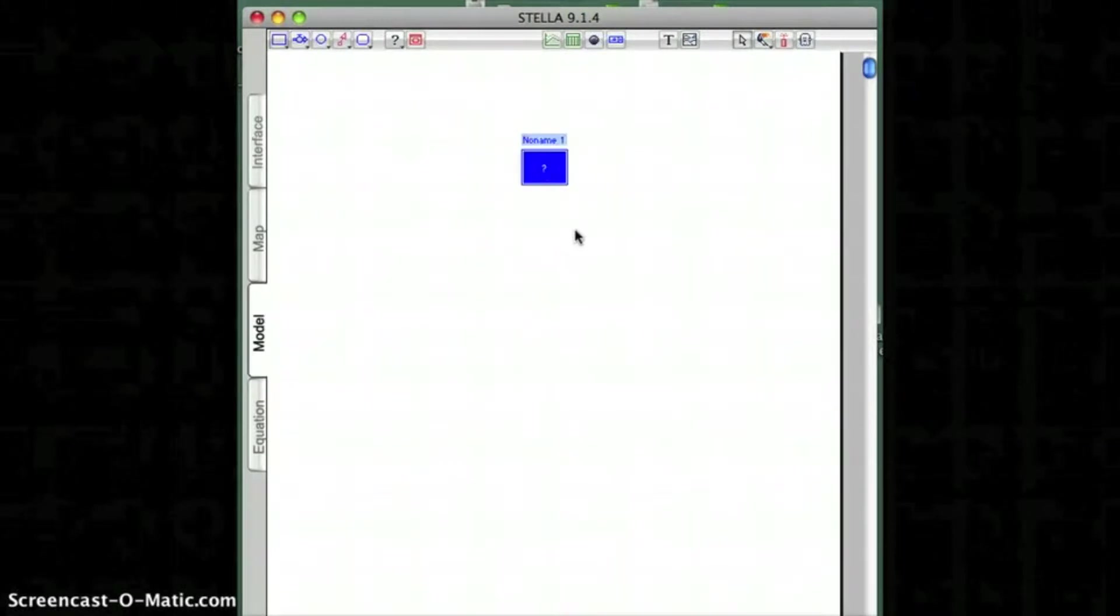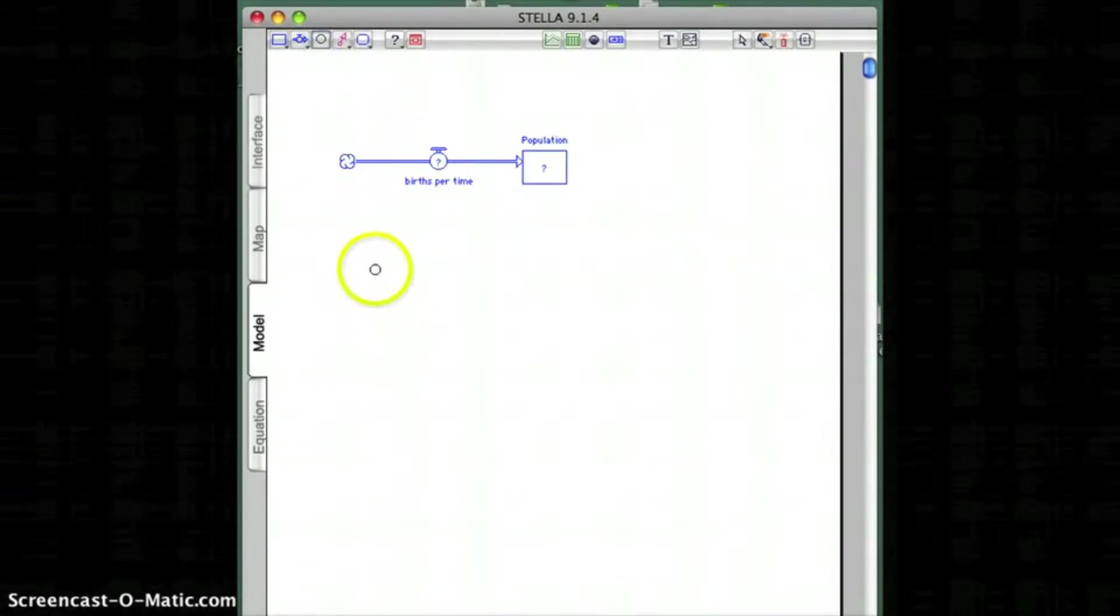I'm going to show you the most basic features of Stella. First, I've created a thing called the stock, which in this case is a population. Next is going to be a flow into the stock. In this case, it's going to be births per time. And then we're going to create a converter, which is like a variable.